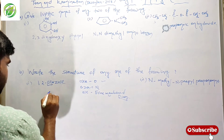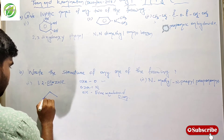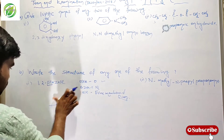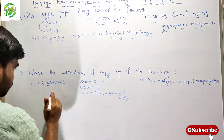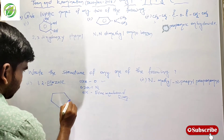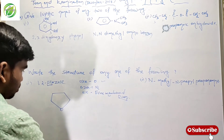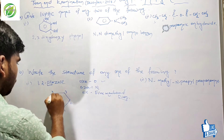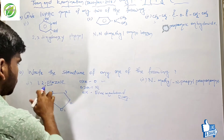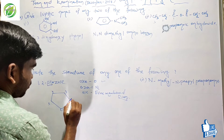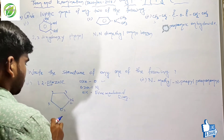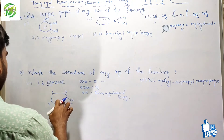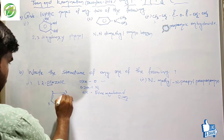This is oxygen. We start numbering from oxygen: 1, 2, 3, 4, 5. Position 2 has the nitrogen atom. So in 1,2-oxazole, position 1 is oxygen and position 2 is nitrogen.